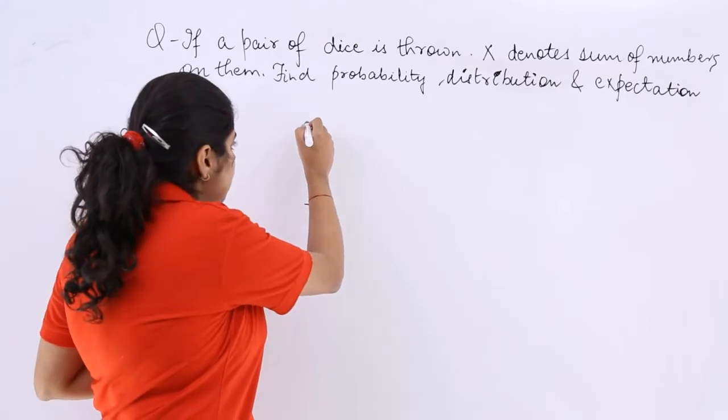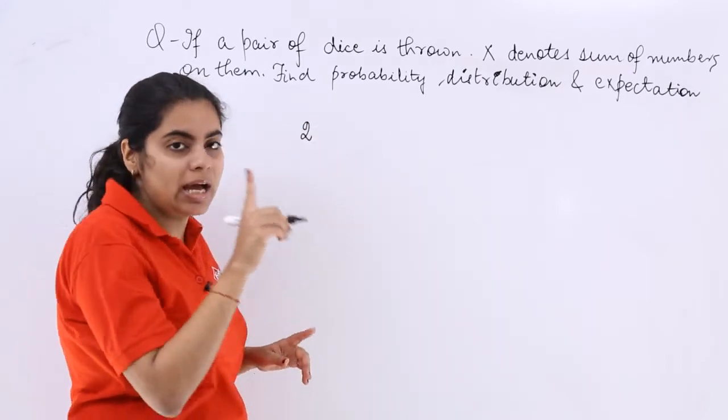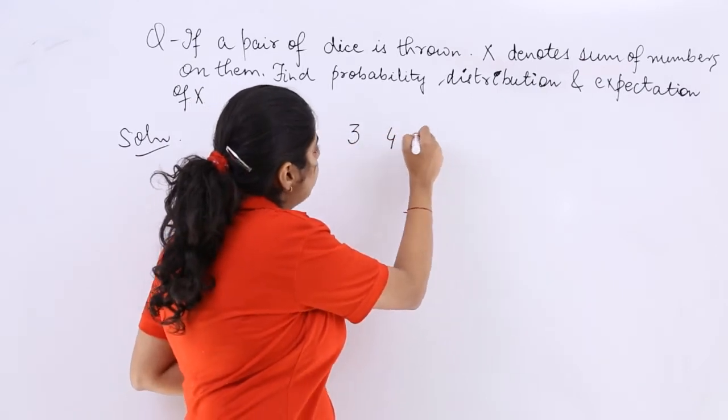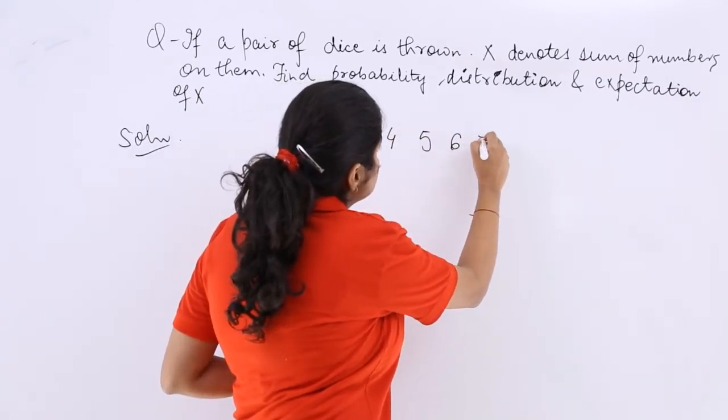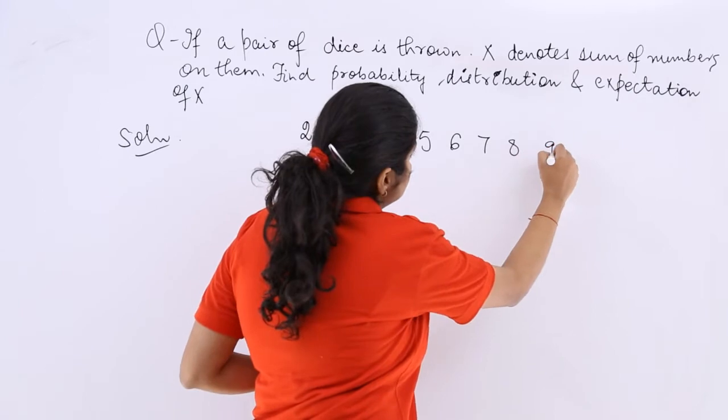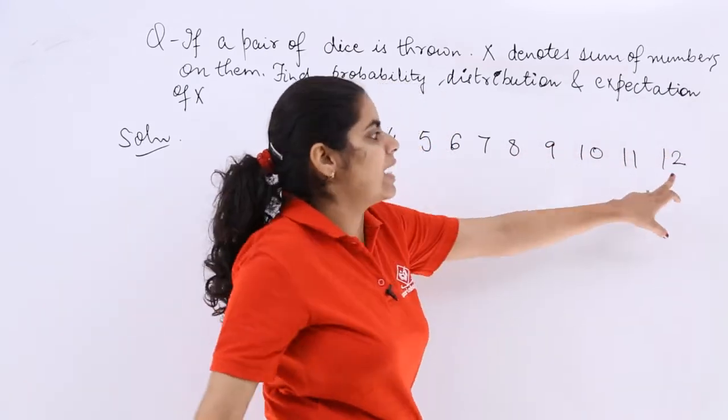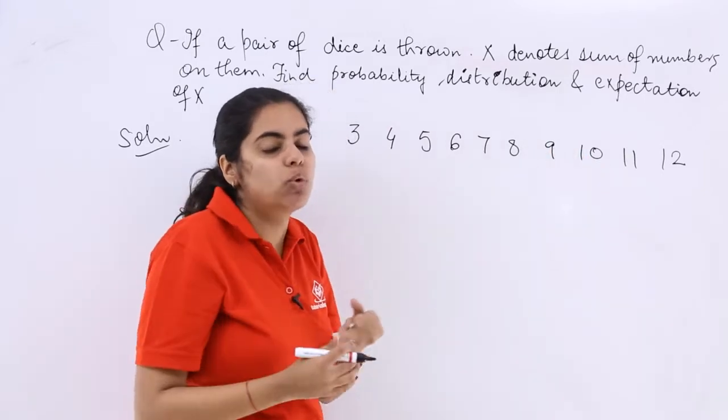So either the sum of number can be 2 because 1 and 1 on both the dice will lead to 2, or 3 or 4, 5, 6, 7, 8, 9, 10, 11 and 12. Why? Because the maximum is 6, 6 on both pair of dice.